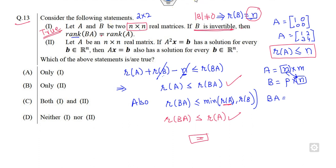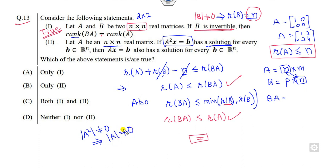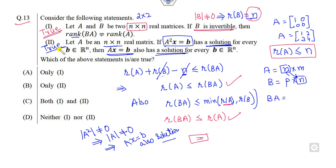Now look at the second part. A is any n×n matrix. If A²x = B has a solution, when will it have a solution? When the determinant of A squared is non-zero, which means the determinant of A is also non-zero. That means Ax = B also has a solution. So if A²x = B has a solution, then Ax = B also has a solution — this is also a correct statement. So both the first and second options are the correct answers.